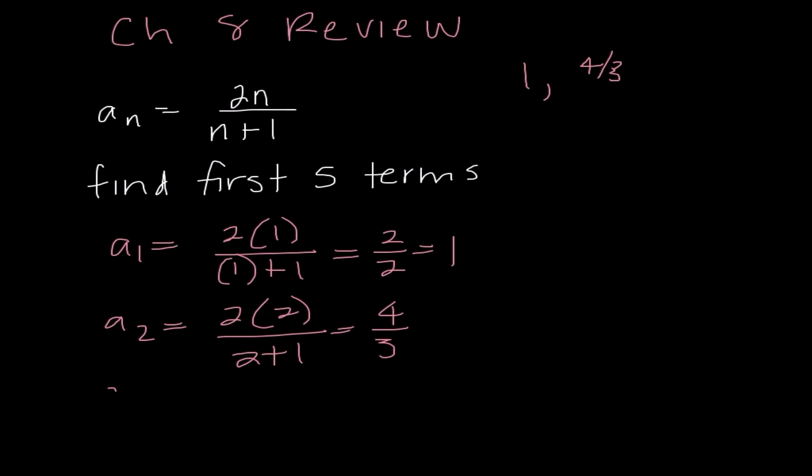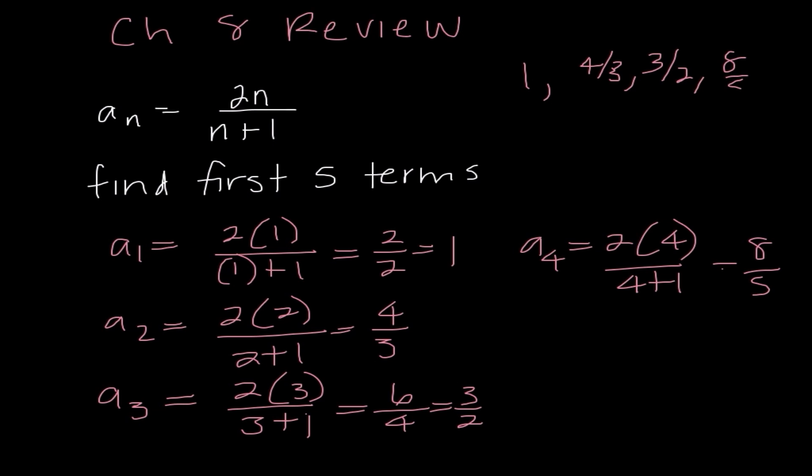A sub 3, I would do 2 times 3 over 3 plus 1, which is 6 over 4, or 3 halves. A sub 4, you guessed it, is 2 times 4 over 4 plus 1, which would be 8 over 5. And then lastly, we need to find a sub 5, which is 2 times 5 over 5 plus 1, or 10 over 6, which is 5 over 3. So this would be our answer to that particular problem.